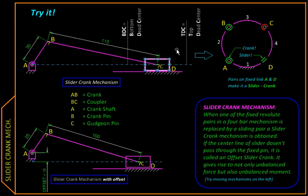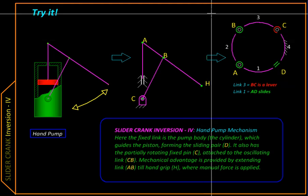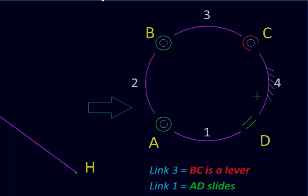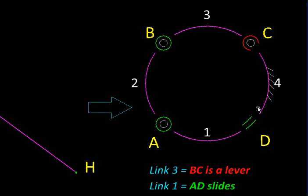This is how it looks in a schematic diagram. Link number 4 here is fixed. On one side it has a partially rotating hinge, so it is going to have an oscillating link connected to it. On the other side it has a sliding pair, a prismatic pair, so it will have a slider that slides in it.